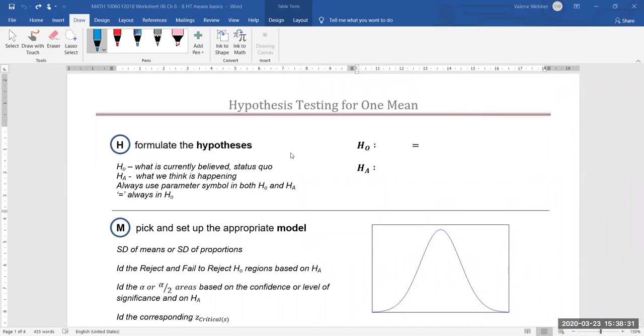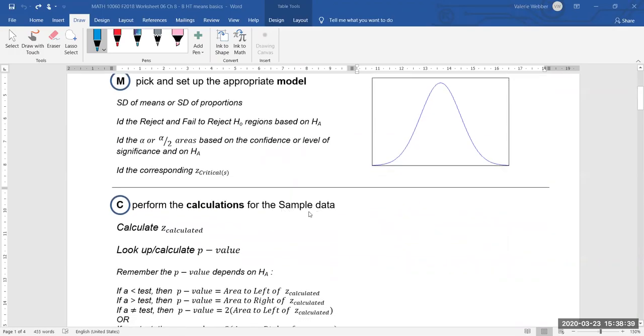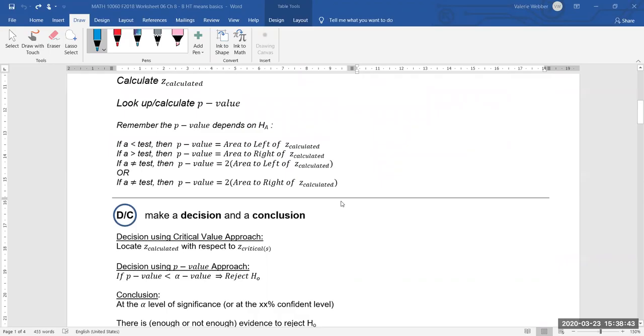Formulate your hypotheses that I've called H, pick and set up your appropriate model that I've called M, perform your calculations for our sample data that I've called C, and then finally D/C make your decision and come up with your conclusion.